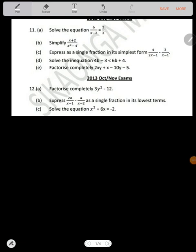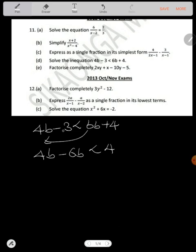Then it says solve the inequality. We have 4b minus 3 less than 6b plus 4. It's the same as an equation. Just get this one the other side. So you have 4b minus 6b less than 4. This one will go the other side and become positive 3.